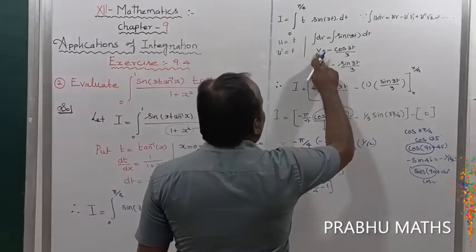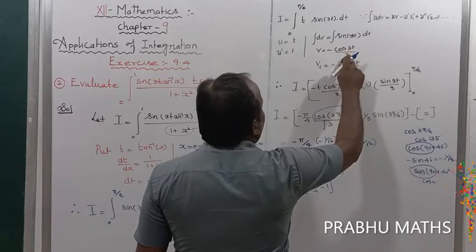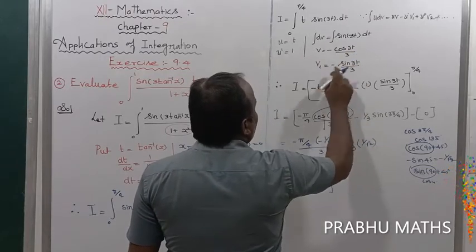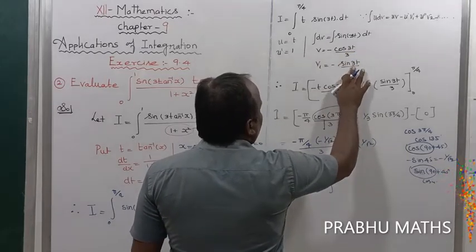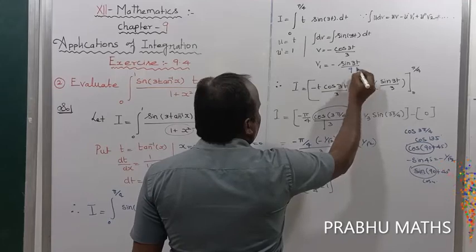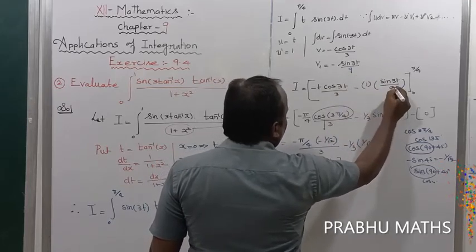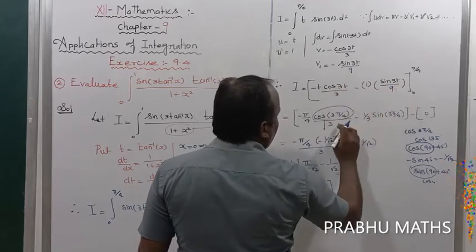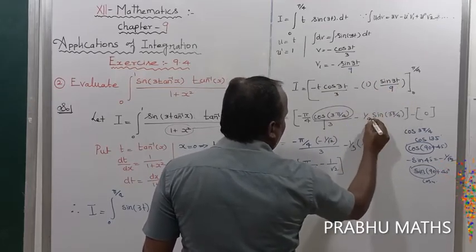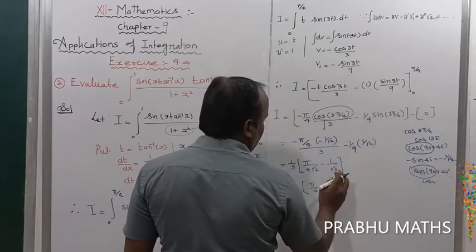Rechecking: v₁ = −cos(3t)/3, so the term involving 9 comes from the second integration. The combined expression gives i = π/(12√2) + 1/(9√2), taking 1/√2 as common: i = (1/√2)·(π/12 + 1/9).